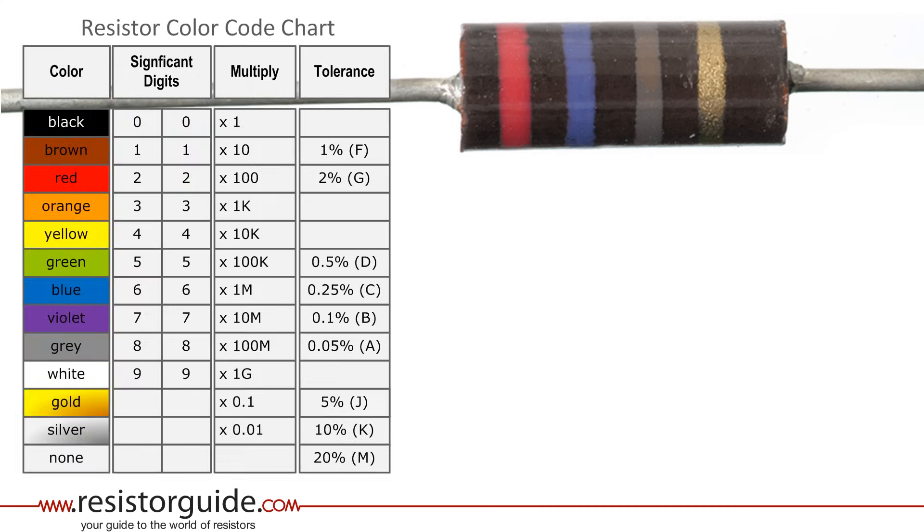You can try to memorize the meaning of each band and color. But you can also use the resistor color code chart to decipher the code. At resistorguide.com you can even find an automatic calculator to decipher the code for you.